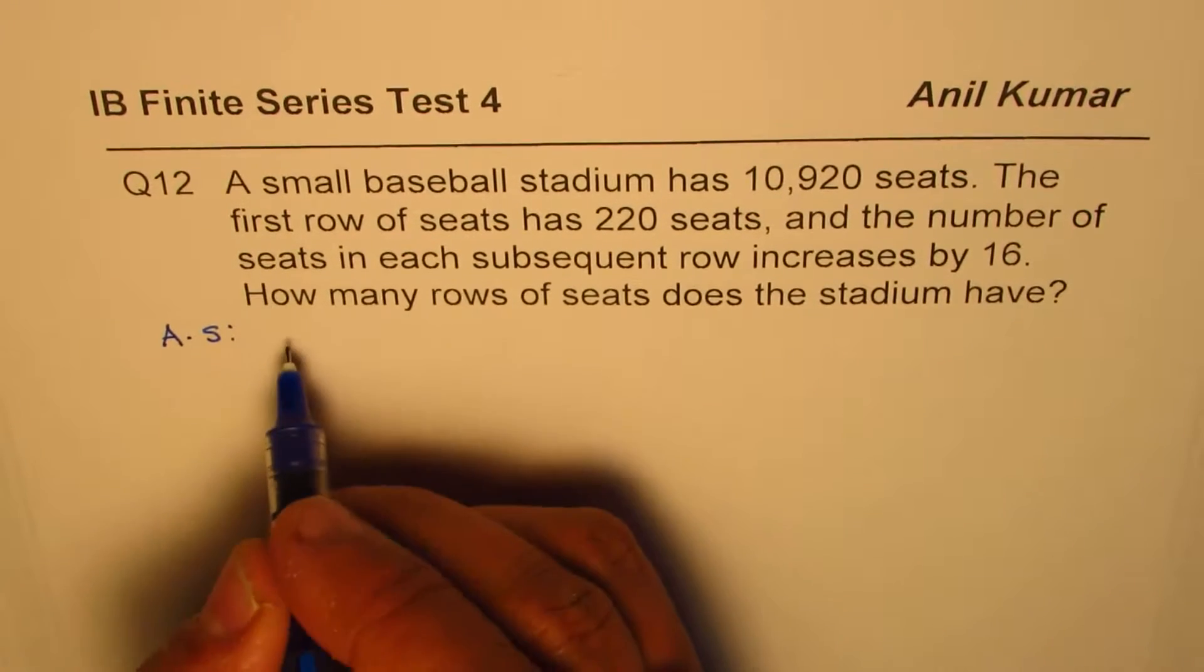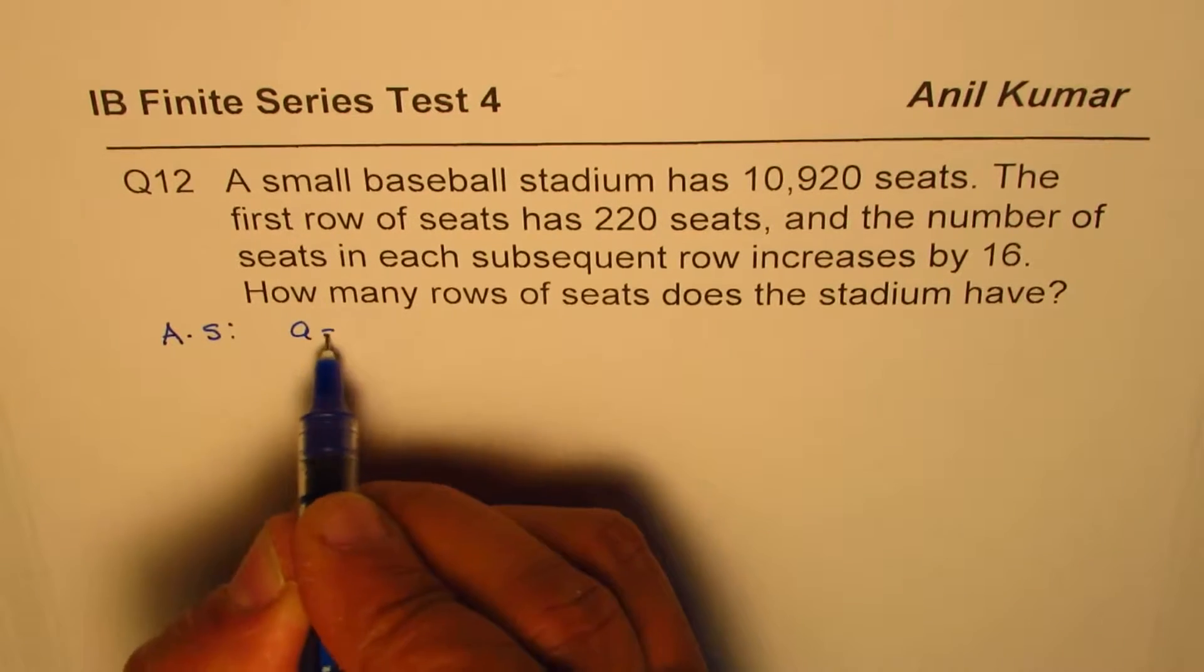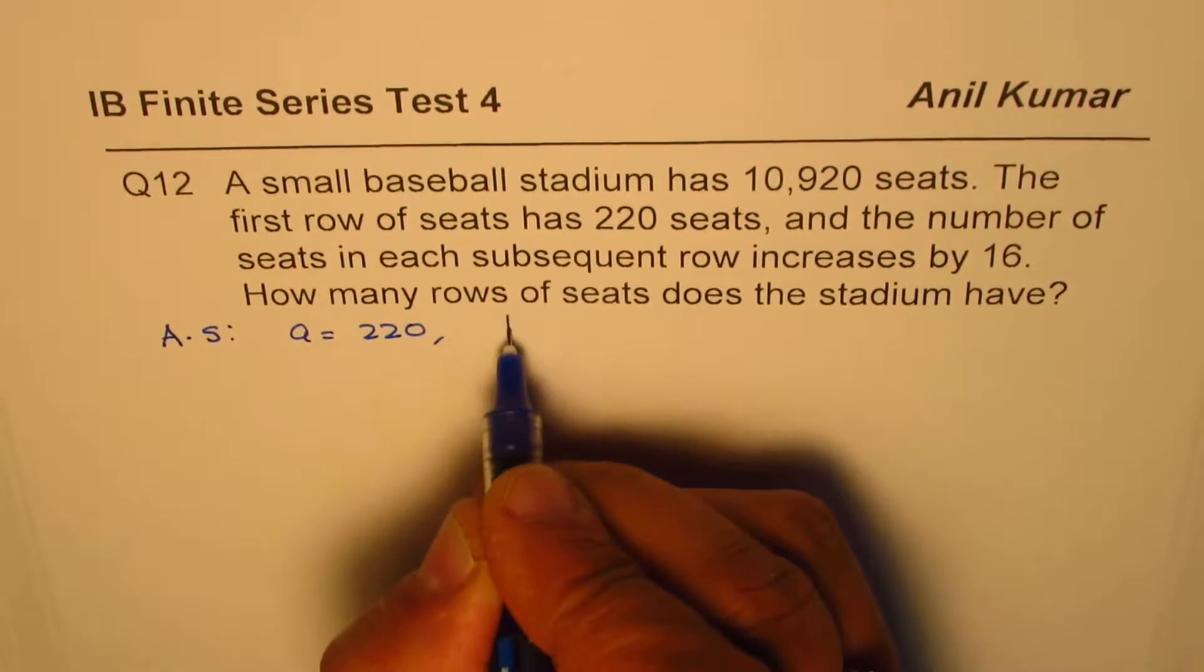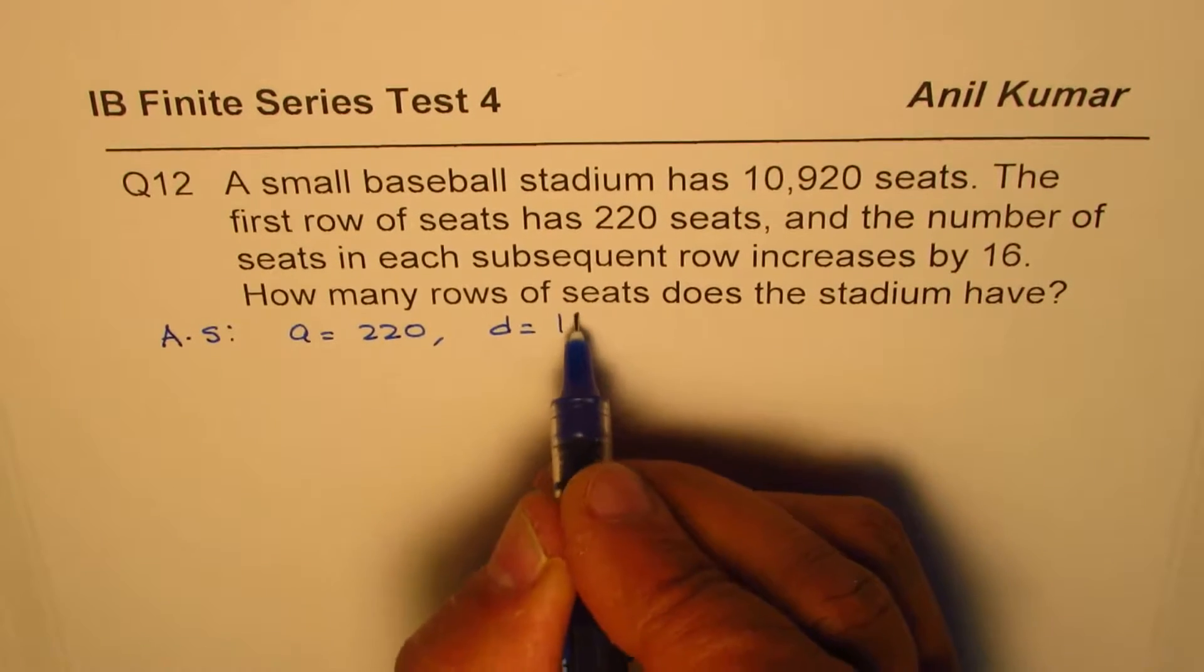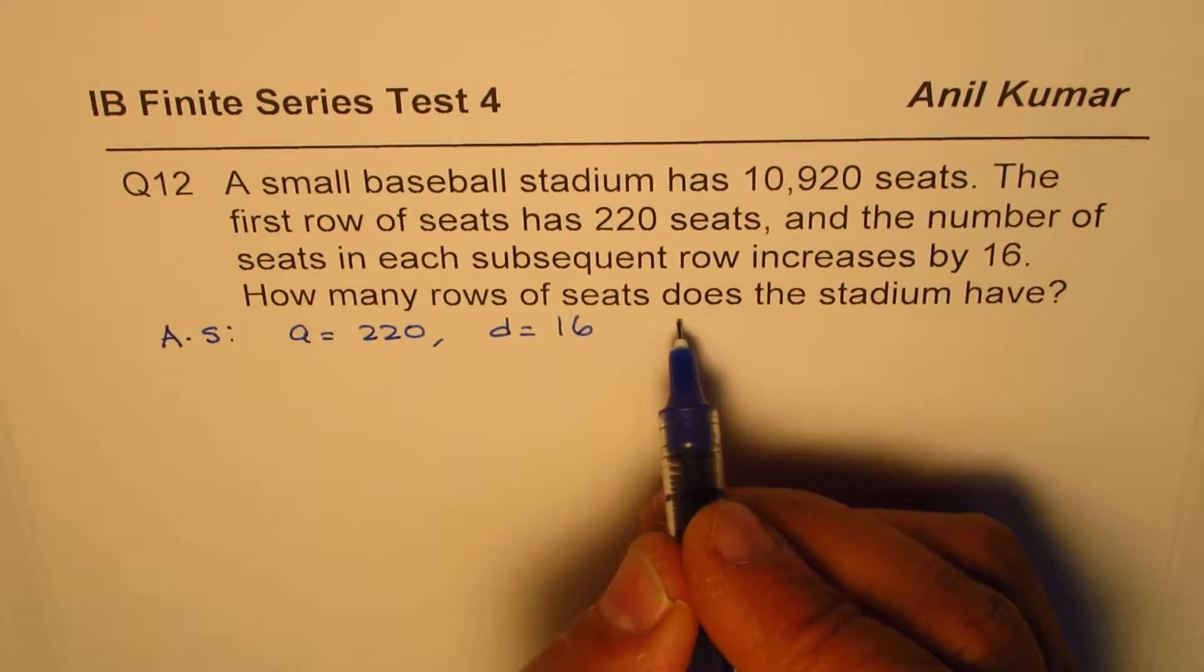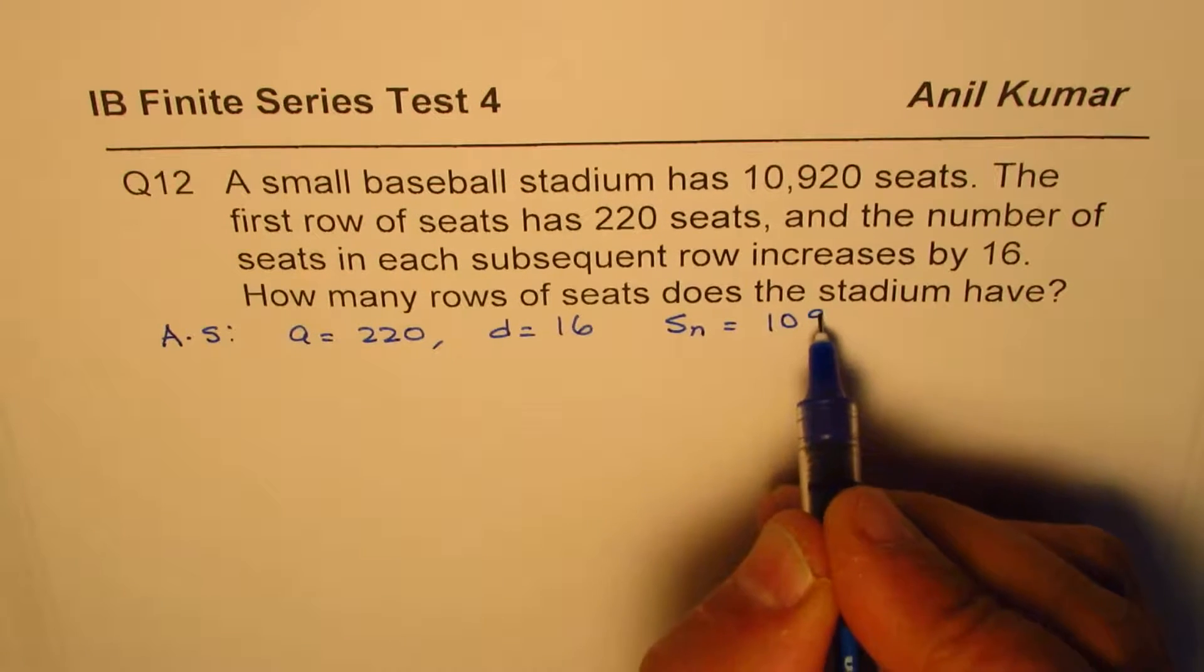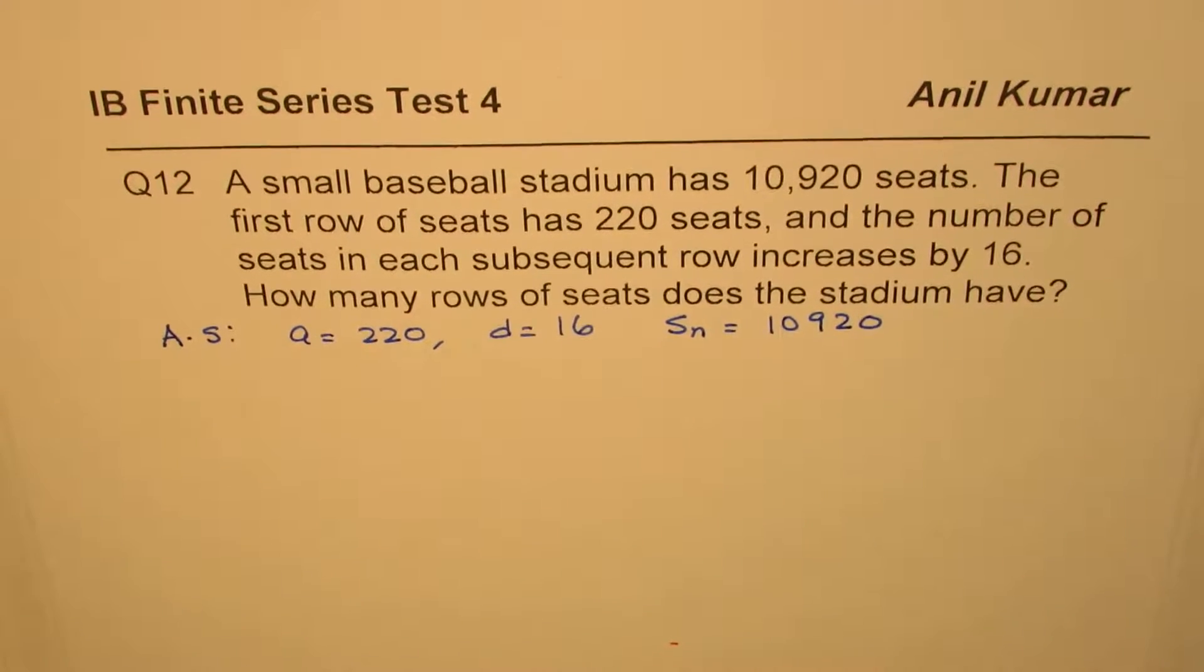Now in this particular question we are given an initial number of seats is 220. We are also given d, it increases by 16, and we are given the sum S_n which is 10,920. So all this information is given to us.